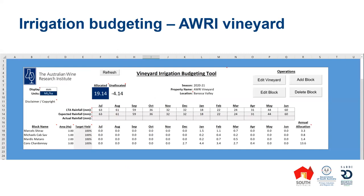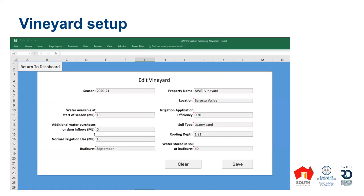Here's a screenshot of the irrigation budgeting tool — it is an Excel-based tool. As an example, I've entered in the AWRI vineyard, complete with blocks named after all our favourite industry development and support staff members. When you set up a vineyard, you enter the parameters that drive the tool, especially around the weather data and some of the soil information. Most of those fields are fairly self-explanatory. You talk about the season, the amount of water you've got available for irrigation.